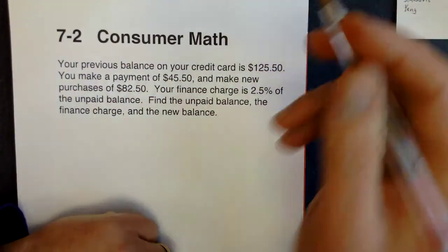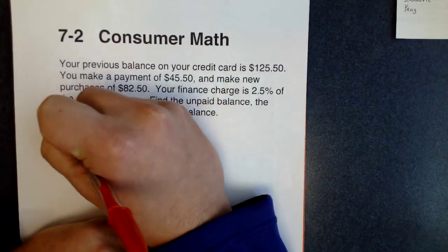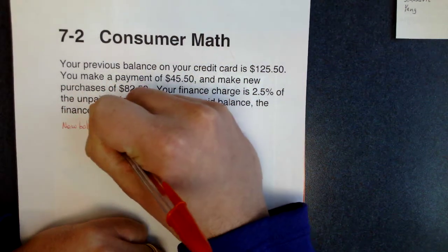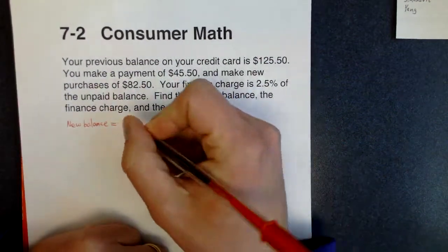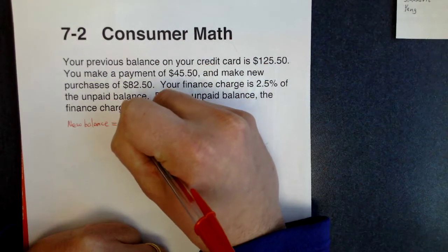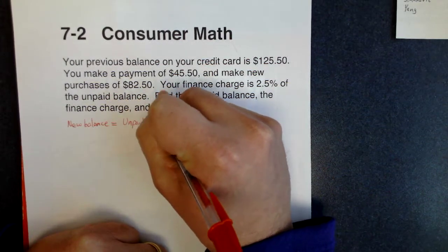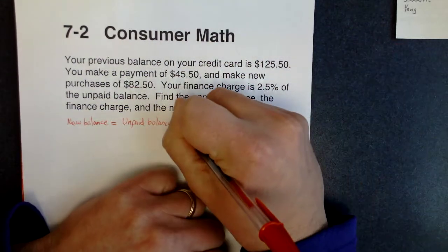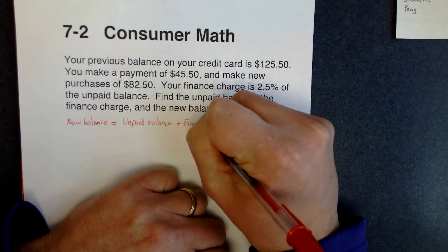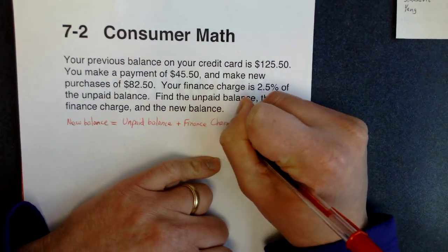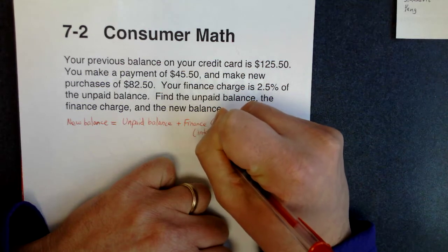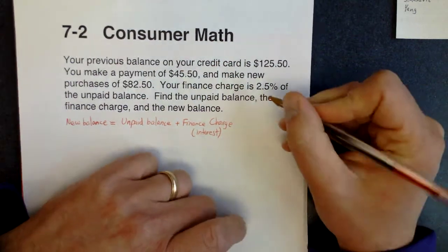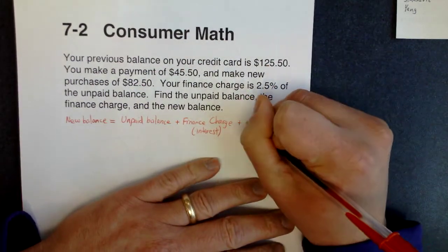There's a formula that works with Section 2. I'm going to put that on the top here so we can see how this works. To find the new balance, you're going to do a few things. First, you're going to take the unpaid balance — that's the amount of money you still owe on the credit card. To that, you're going to add your finance charge, which is the amount of interest you're being charged on your credit card. And then the last thing we'll do is add on any new purchases.